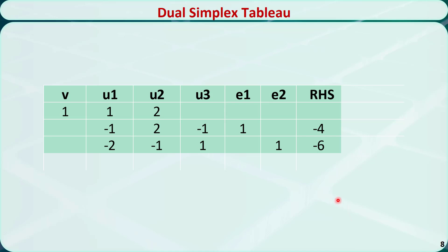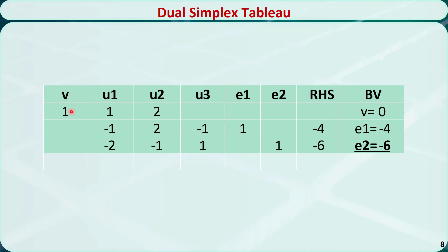Let's write this in a tableau. The basic variables are the variables with a coefficient of 1 that appear in only one row — so the basic variables are e1 and e2. Note that v is not a basic variable; it represents the objective function value. Setting the non-basic variables to 0 and solving for the basic variables, we check if the tableau is optimal by verifying whether the right-hand side of each constraint is non-negative. We find that the right-hand side of both constraints is negative, so it's not optimal yet.